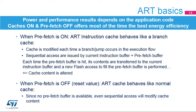If the pre-fetch buffer is enabled, the ART instruction cache behaves like a branch cache. The cache is modified each time a branch or a jump occurs in the execution flow. Sequential accesses are issued by the current instruction buffer and the pre-fetch buffer. Each time the pre-fetch buffer is hit, its contents are transferred to the current instruction buffer, and a new flash access to fill the pre-fetch buffer is performed. In this case, the cache content is not altered. If the pre-fetch buffer is disabled, the ART instruction cache behaves like a normal cache. Since no pre-fetch buffer is available, even a sequential access will modify the cache content.